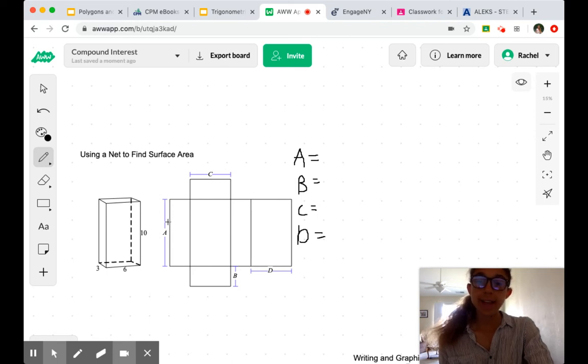Imagine folding it back up and seeing what side lengths are going to align. We get that A, that longest side, is 10 centimeters. B is that shortest side, so that is 3 centimeters. C and D, when we fold them up, are actually the same, both 6 centimeters.